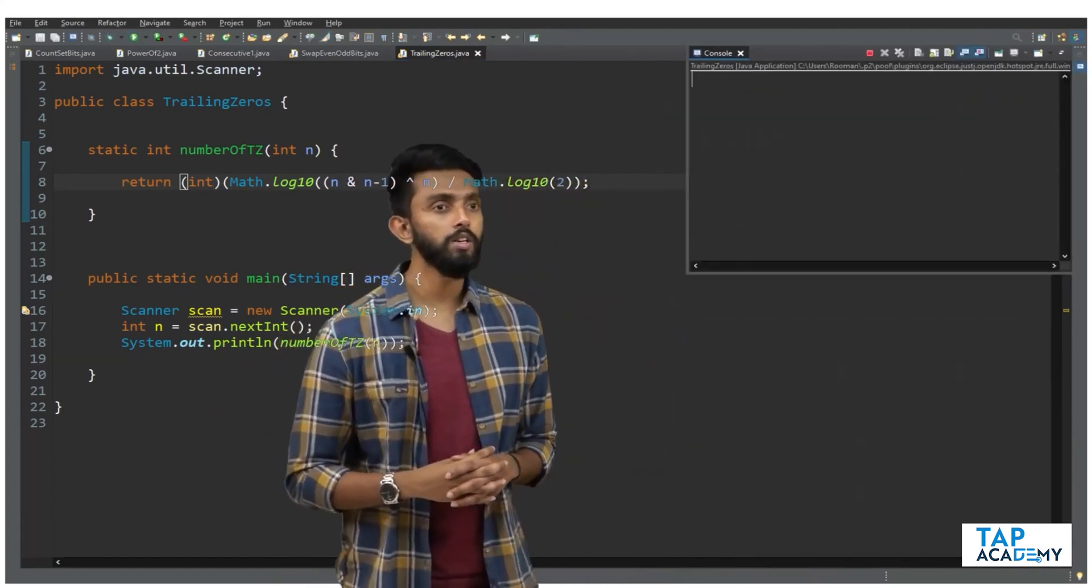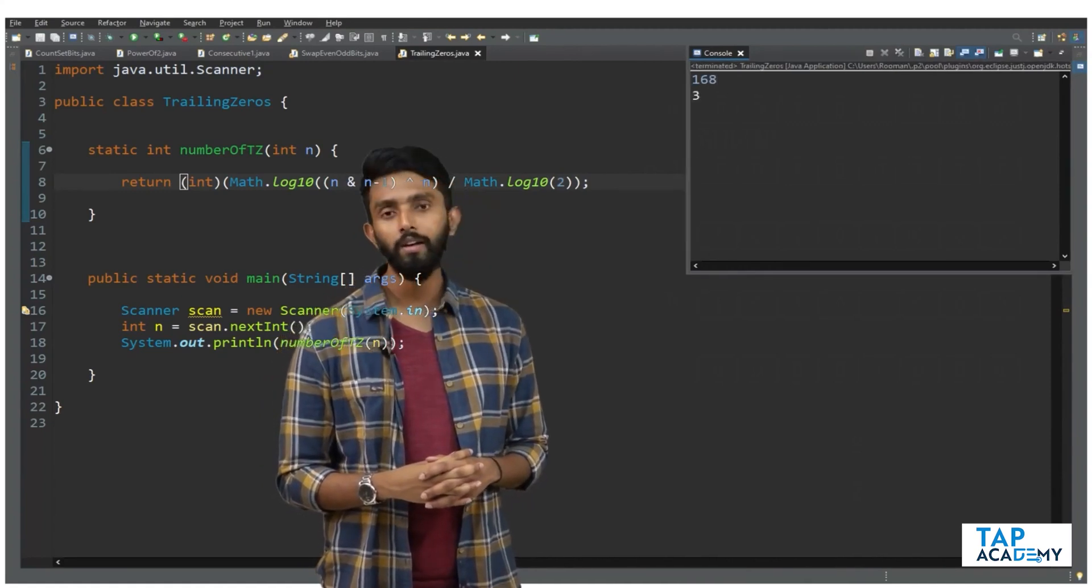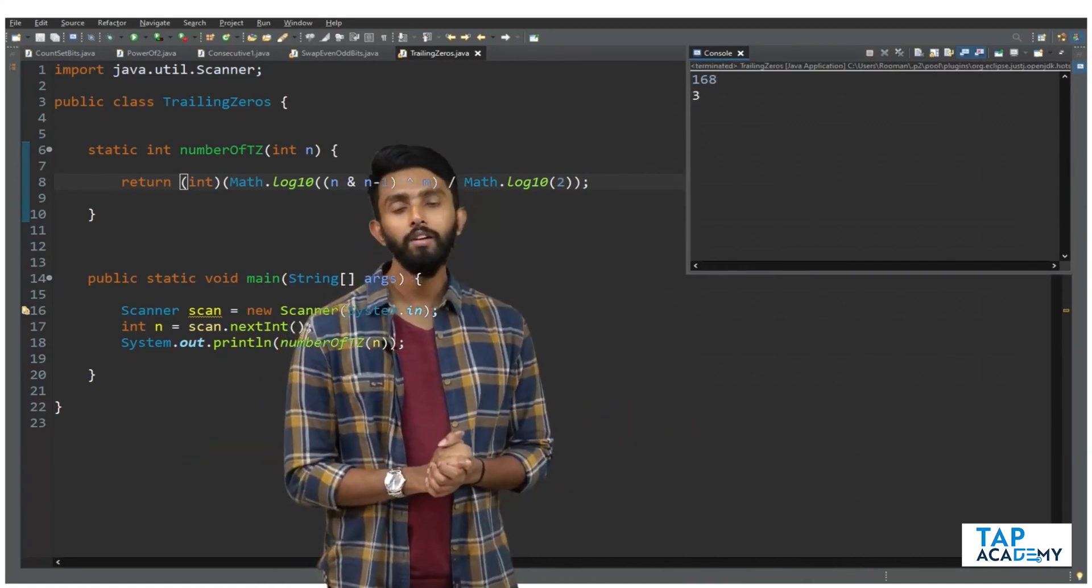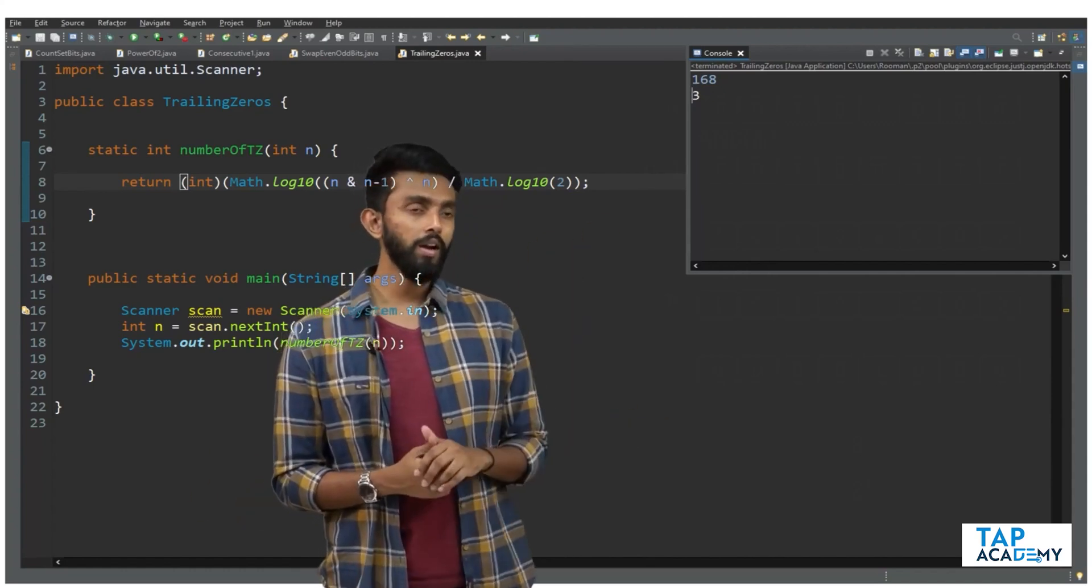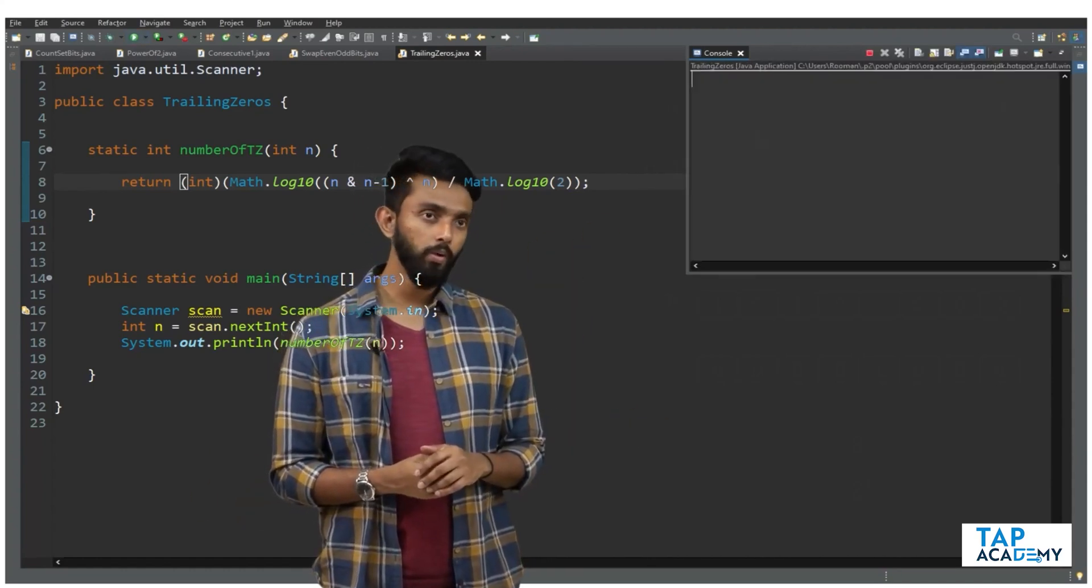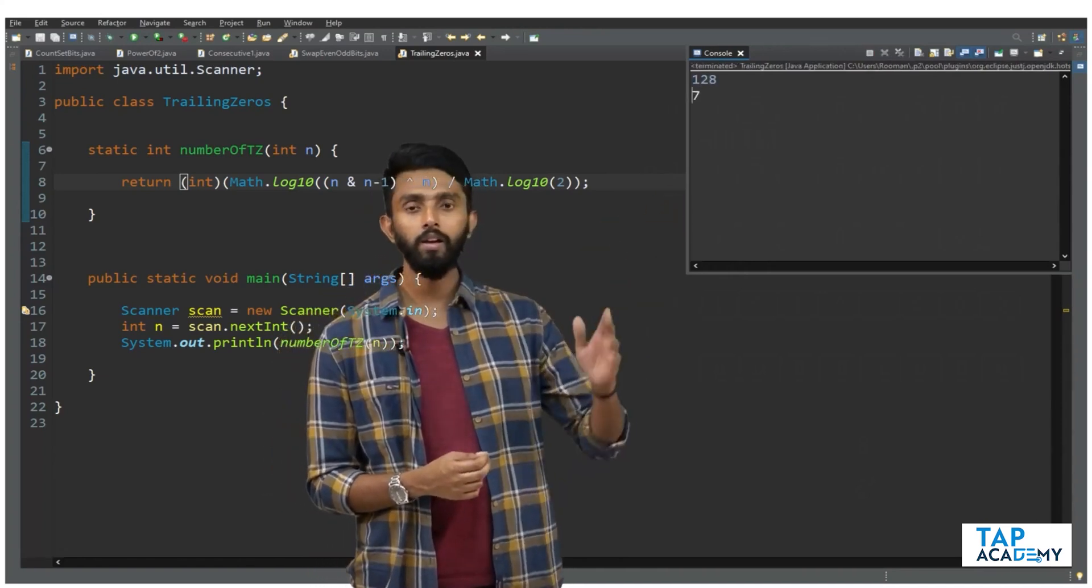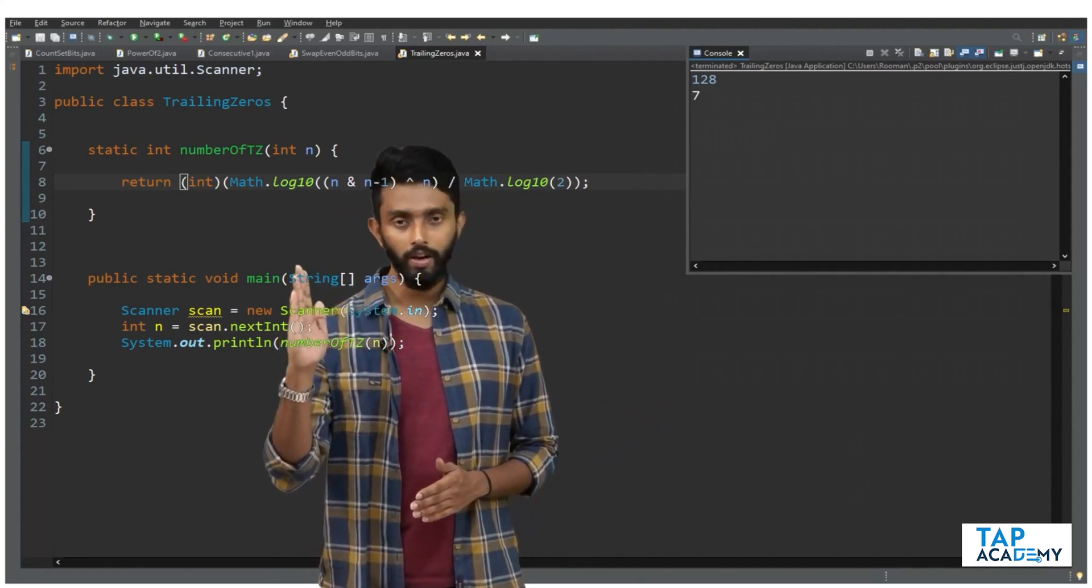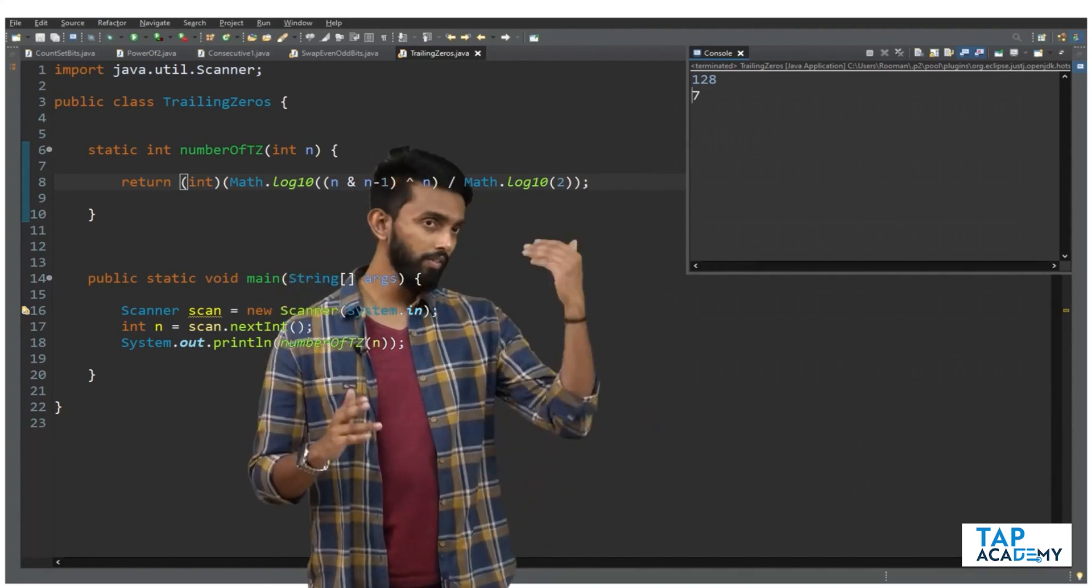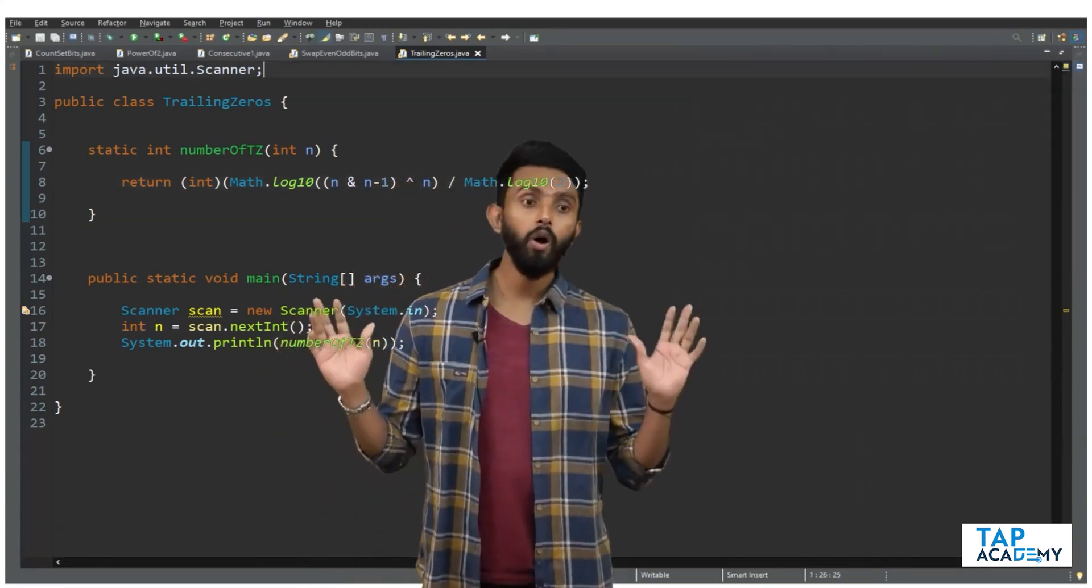Will this work? Let's check it out. I execute it and put 168 and press enter. Correctly it is telling there are three trailing zeros. Let's assume I give one more value like 128. Correctly it is telling there are seven trailing zeros because only that first bit will be one, everything else will be zeros.